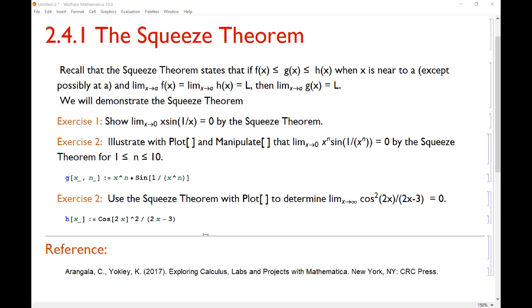Let's recall the Squeeze Theorem states that if we have three functions with this relationship: f(x) is less than or equal to g(x), which is less than or equal to h(x), which basically means g(x) is trapped between f and h when x is near a, except possibly at a. And when we look at the limits as x approaches a of f and h, they both go to L.